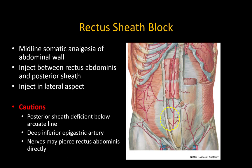Finally, note that in some individuals the thoracoabdominal nerves may pierce the rectus abdominis directly without actually traveling in the fascial plane of the sheath, which may account for instances of suboptimal analgesia.